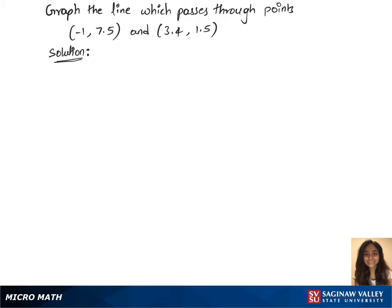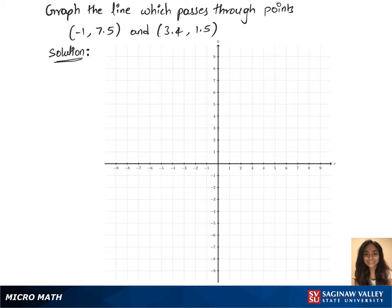To graph the line which passes through these points, we need a graph first. Let's look for the first point on the graph, which is minus 1 and 7.5 — mark that, it's in the second quadrant.